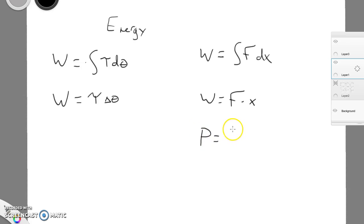So for when we talk about linear measurements or translational motion, power is the change in work over time, or just the work over time, or for instantaneous power, the force times velocity.